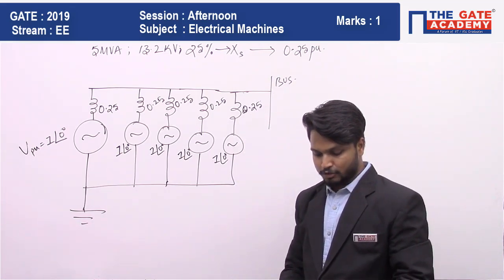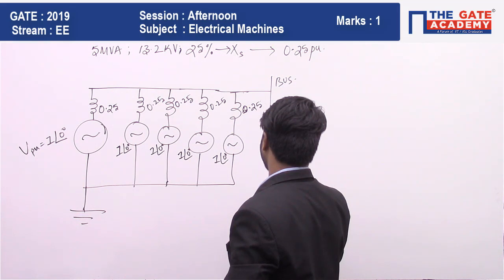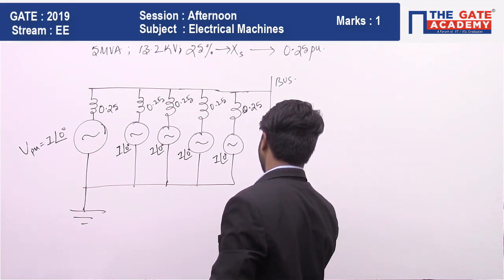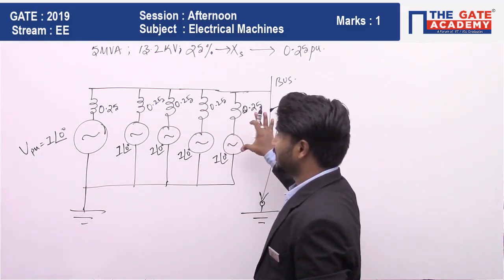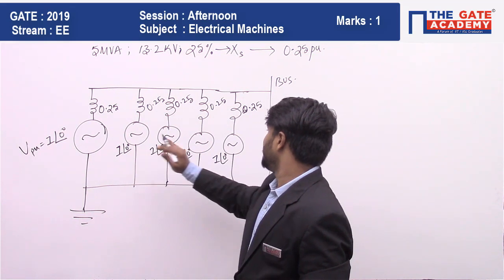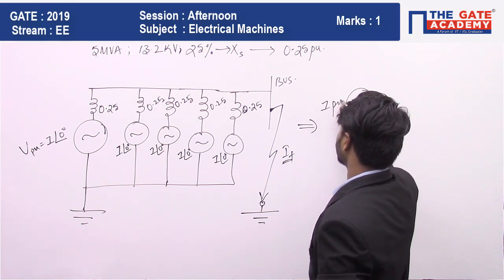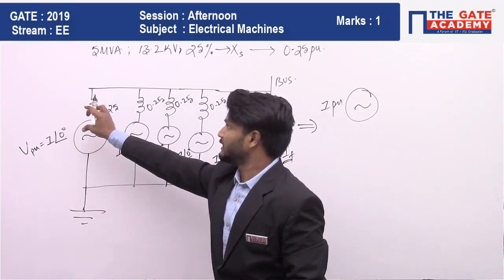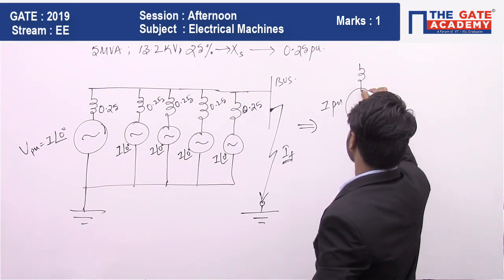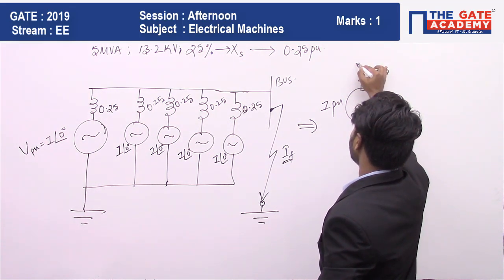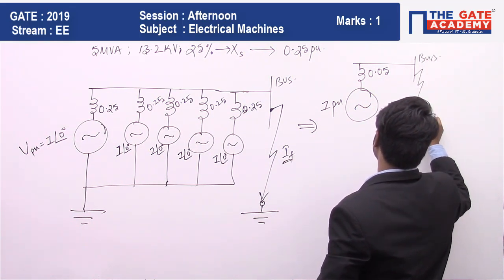The question asks for the short circuit level in MVA at the bus bar. If a short circuit fault occurs at the bus bar between the ground and the bus bar, what is the fault level? Since all five voltages are the same, they can be replaced by a single voltage source of one per unit, with five reactances in parallel: 0.25 divided by 5 gives 0.05 per unit.